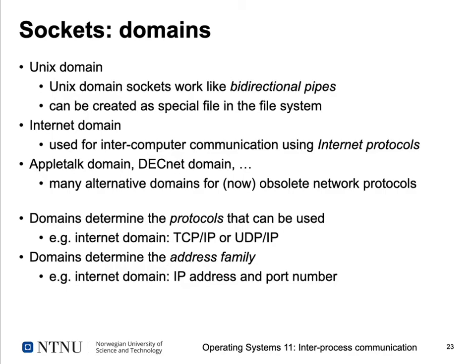The domain determines the protocols that can be used for a socket. For example, for the internet domain you could use a TCP/IP connection for reliable transport, or a UDP/IP connection for unreliable transport. The domain also determines how you address nodes on your network — for the internet domain you use an IP address plus a port number, because the port number differentiates between different processes running on the same computer. Unix domain sockets use different ways to address nodes.